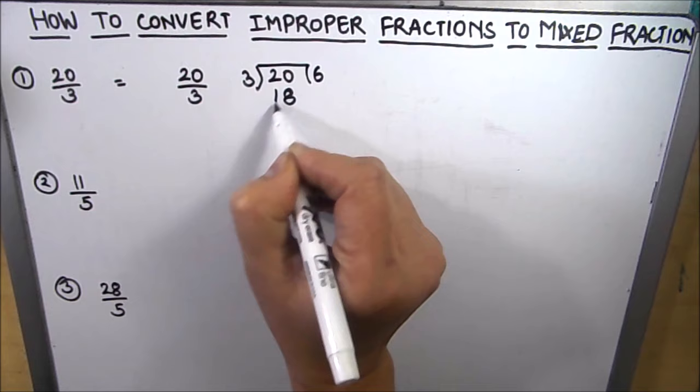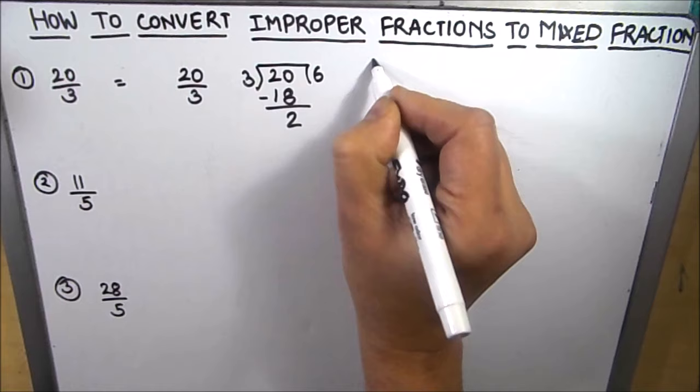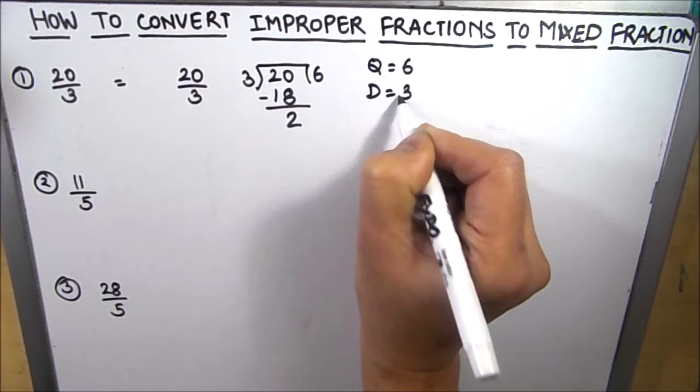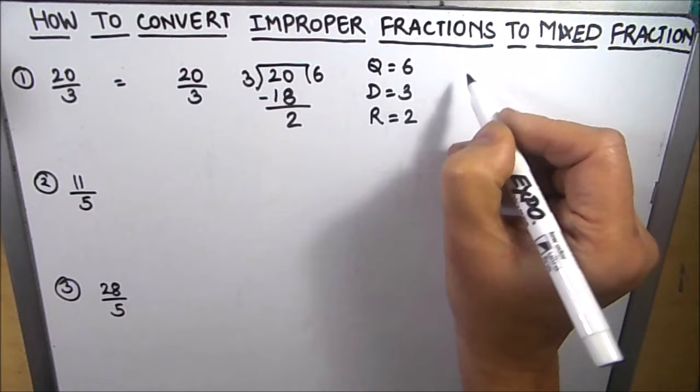So 3 times 6 is 18 and now we are left with the remainder of 2. So here our quotient is 6, divisor is 3, and remainder is 2.